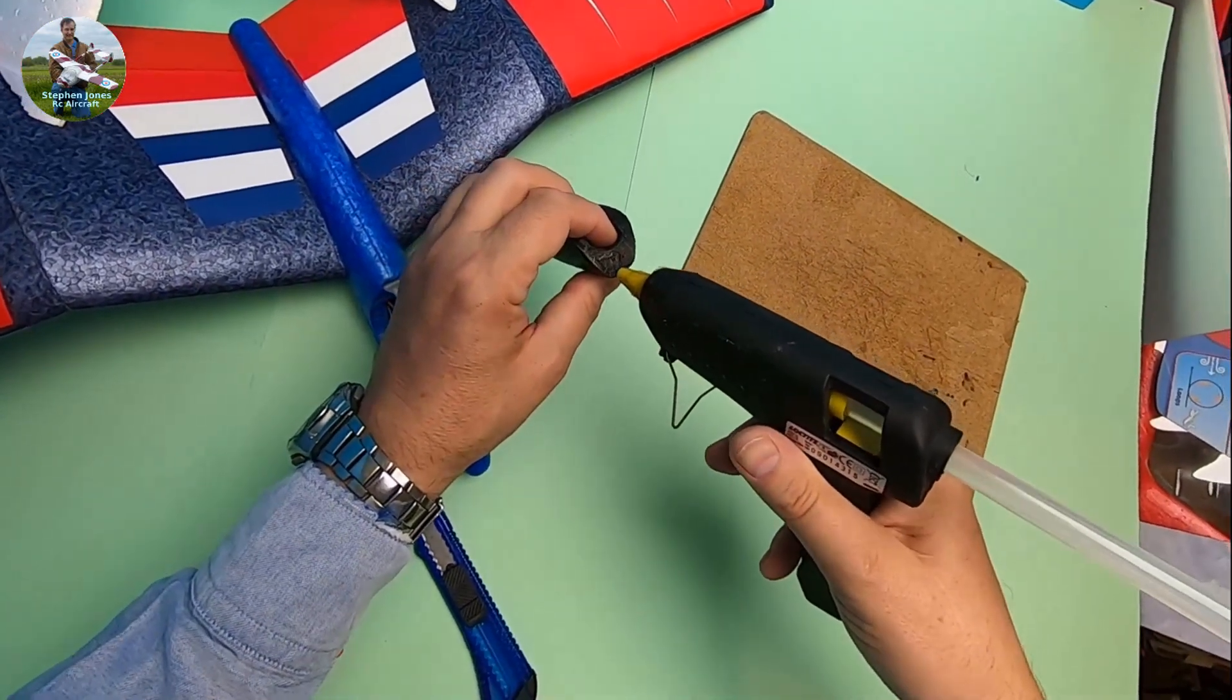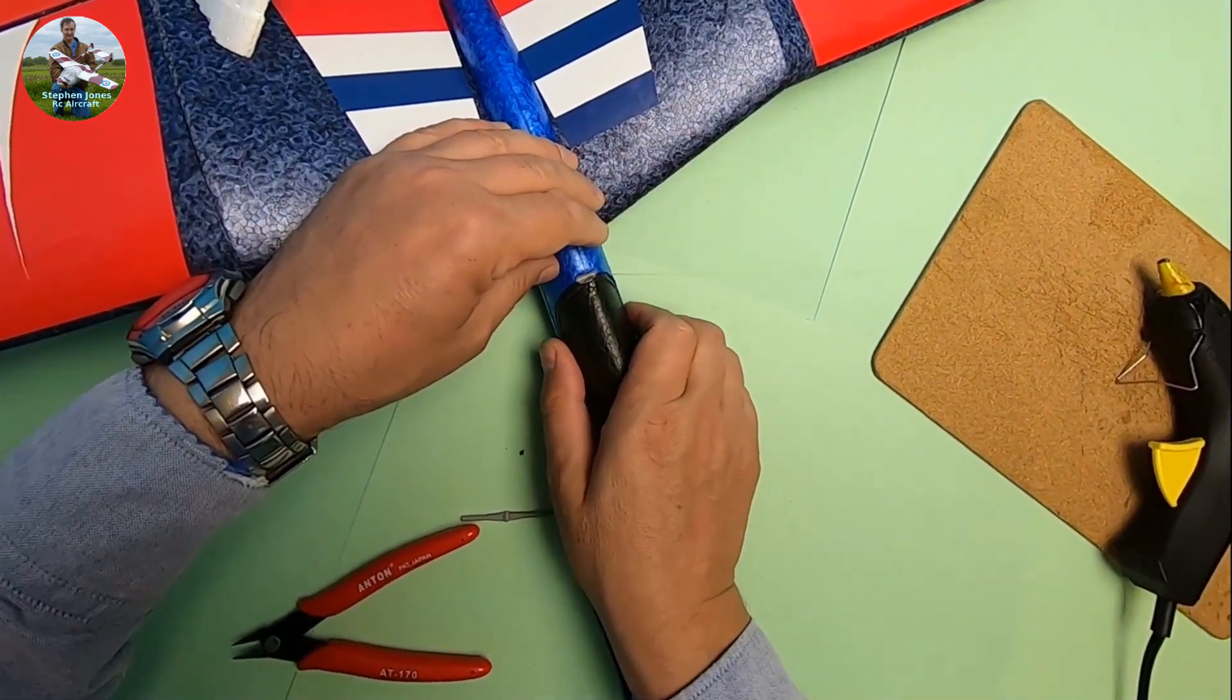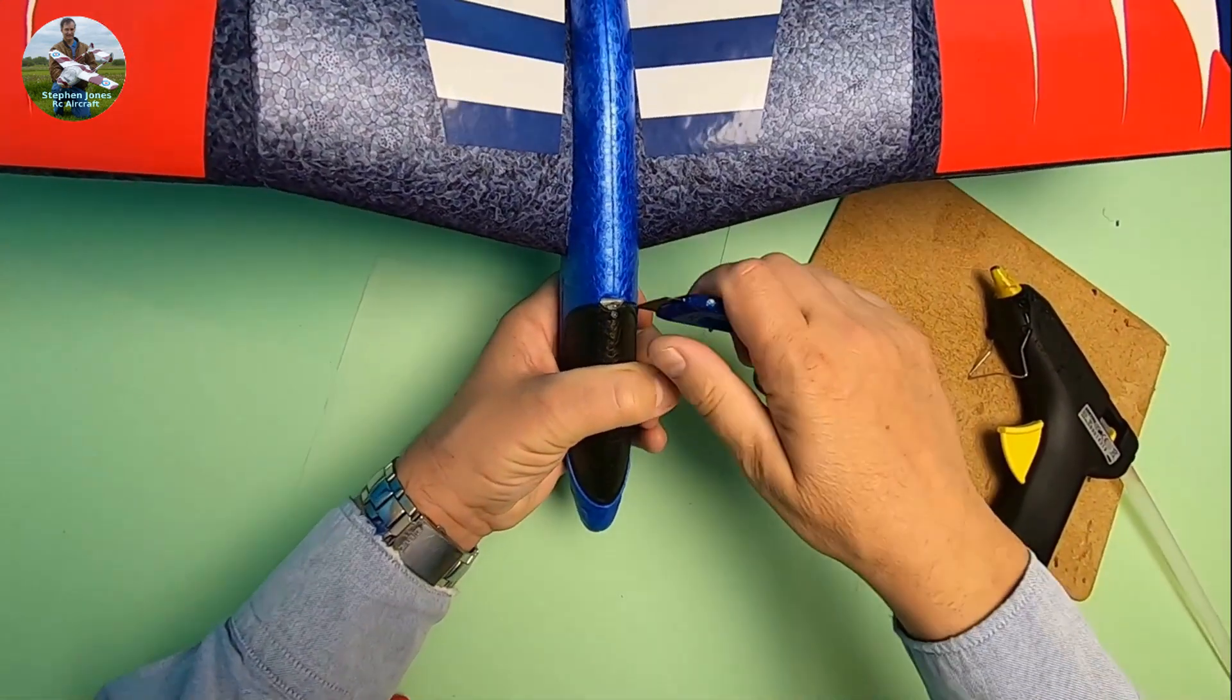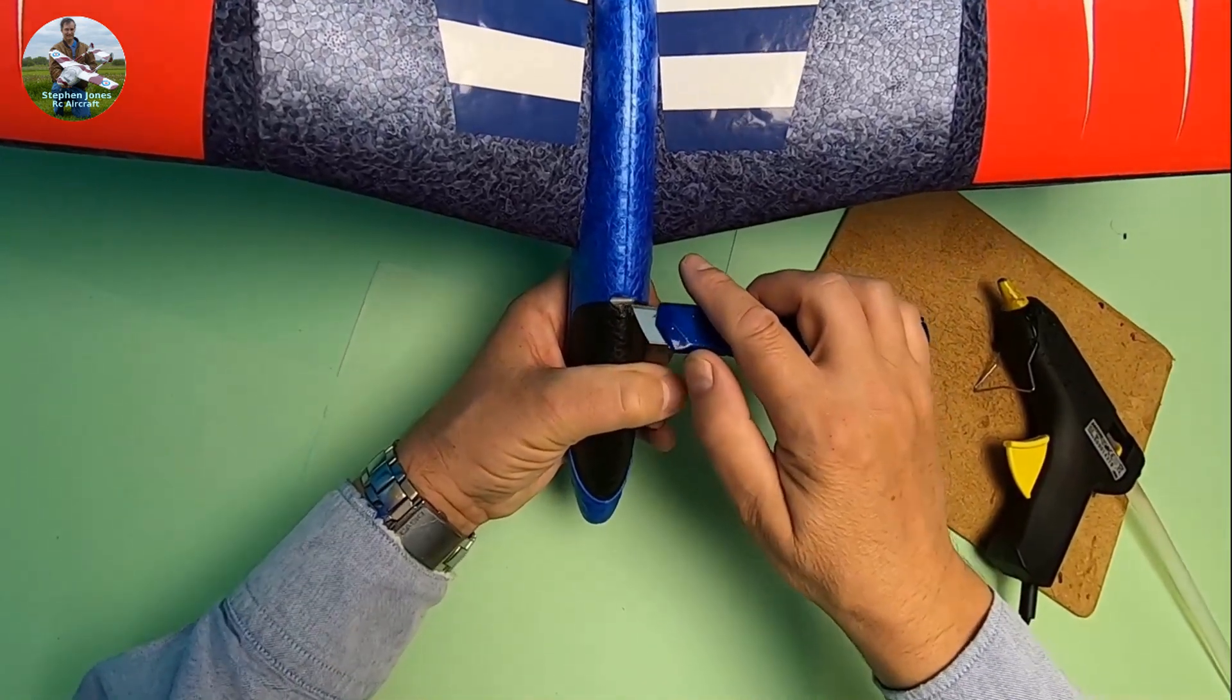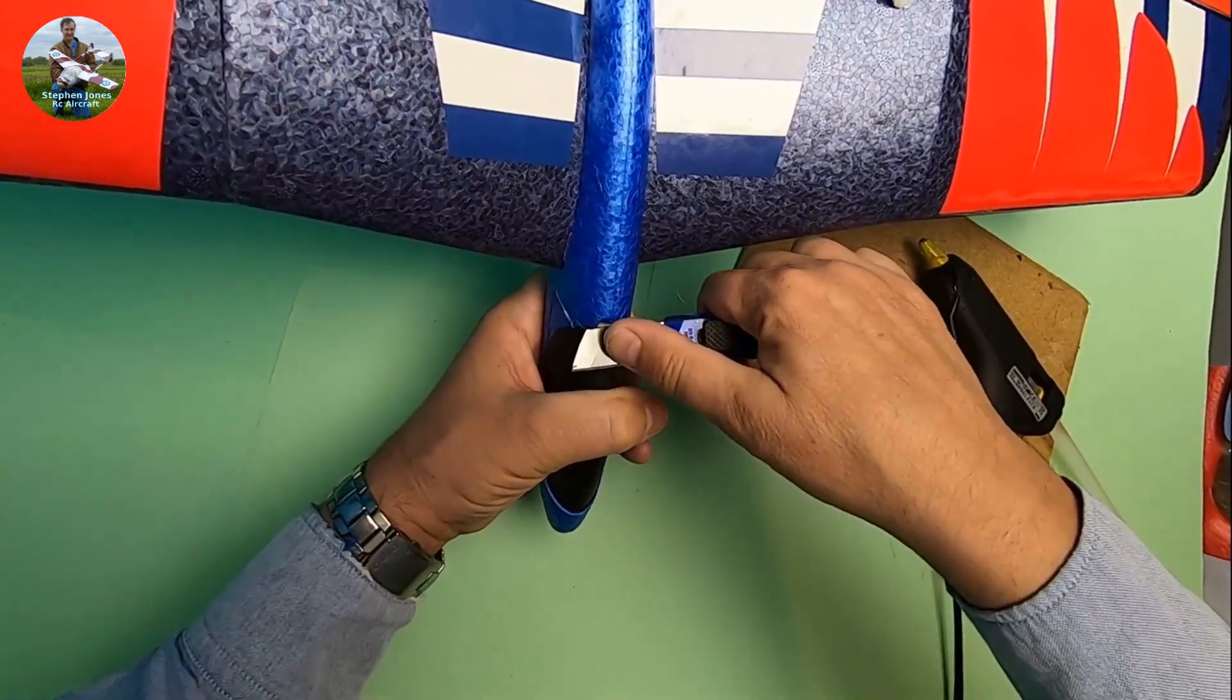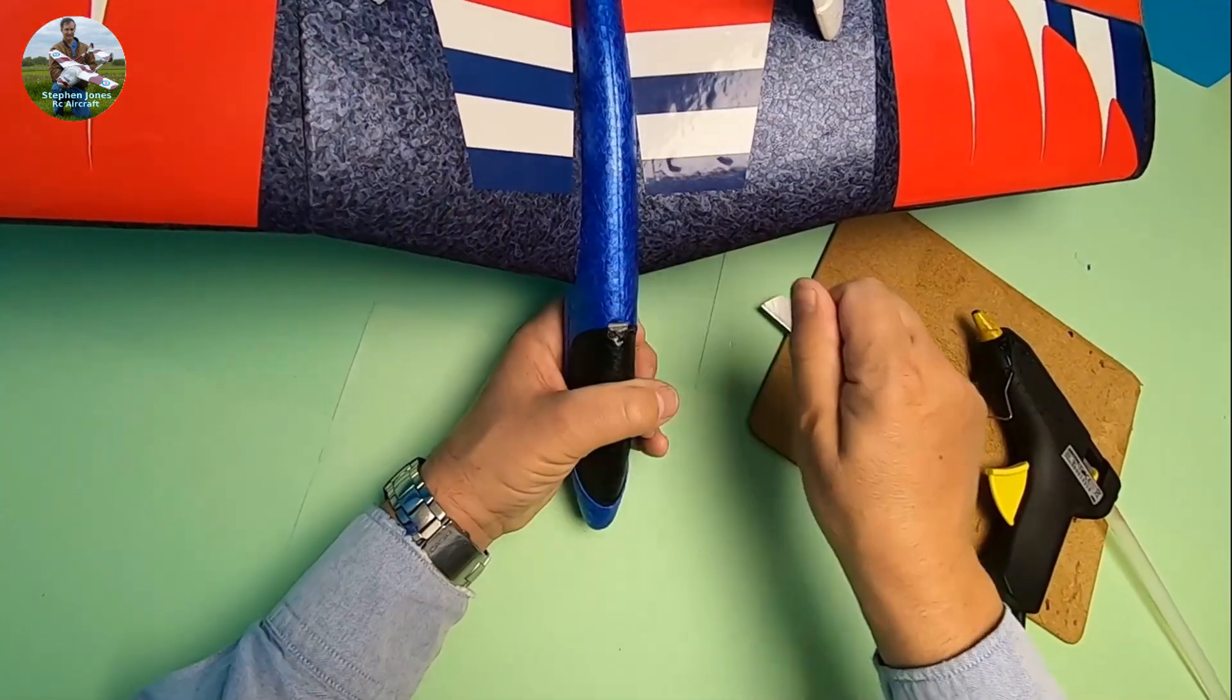Here we go. Now I'm going to hold that in position. I'm hoping that glue is not going to foul up the hinge. So I'm using the cold blade to cool the glue down.